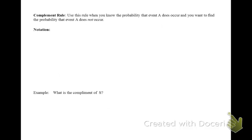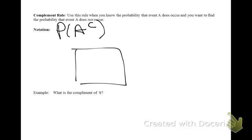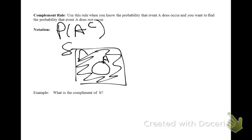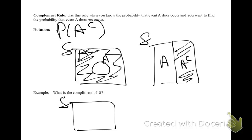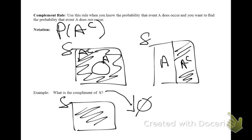The complement rule is used when you know the probability that an event does occur and you're interested in the probability that it does not occur. Notationally, this is the probability of A complement. Visually, if this is your sample space and A is within it, everything not in A is the complement. The complement of the entire sample space is the null set, since the complement of everything is nothing.